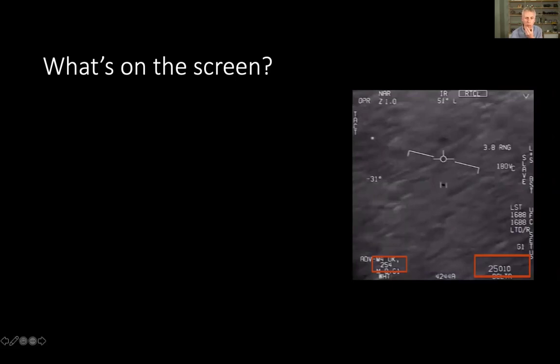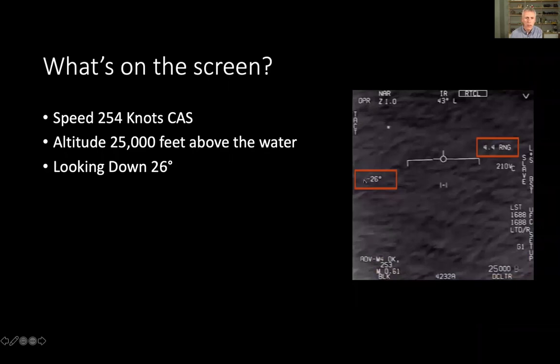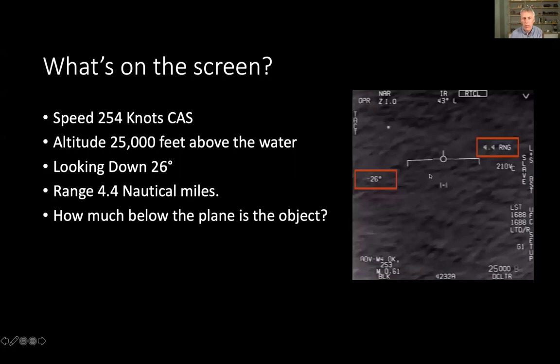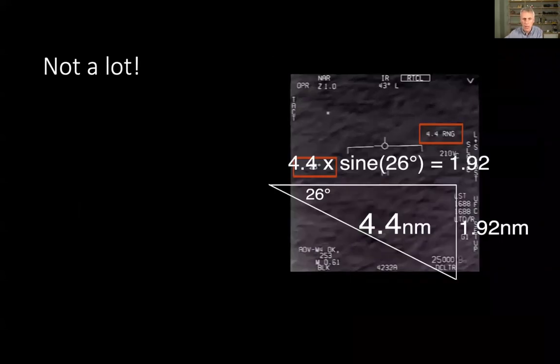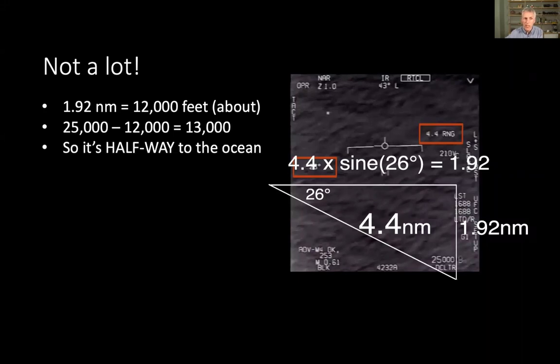We know the altitude. We know the speed of the jet. We also, the altitude is 25,000 feet above the water. We know we're looking down at negative angle, 26 degrees. And we know that it actually gets a radar lock on the object. It's 4.4 miles away. We can do some very, very simple trigonometry with this to figure out how much the plane is below, how much below the plane is this object, how much down. Because we're looking down, 26 degrees, 4.4 miles away. That's the hypotenuse of the triangle. So we just work out what the opposite side of it is, which is 4.4 times the sine of 26 or 1.92 nautical miles down, about 12,000 feet, which means the object is at 13,000 feet, which means it's halfway to the ocean and not very high at all. So they were wrong about that.